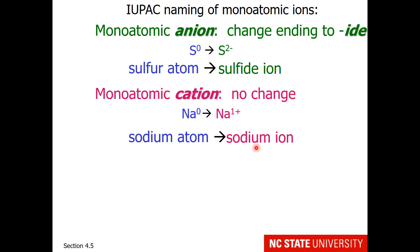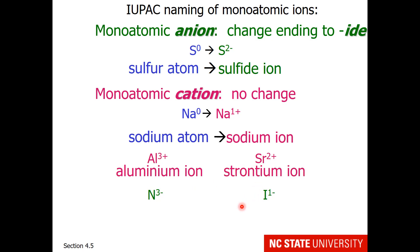Here are some examples. Aluminum neutral becomes the aluminum ion. Strontium neutral becomes the strontium ion. Nitrogen neutral becomes the nitride ion with a 3− charge, and iodine neutral becomes the iodide ion with a 1− charge.